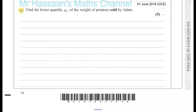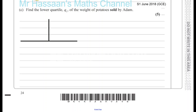Part C: Find the lower quartile, Q1, of the weight of potatoes sold by Adam. Not of all the potatoes, just the ones that are sold by Adam. So that's what we're going to find now — the lower quartile of the potatoes that were sold by Adam.